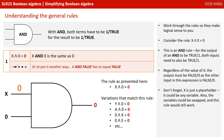So let's work through the rules so they make logical sense to you. Consider the rule X AND 0 equals 0. This is an AND rule, so for the output of an AND to be true or one, both inputs also need to be true or one. Regardless of the value held in X, the output must be false or 0, as the other input in this expression is 0. So X AND 0 must always be 0. X is just a placeholder — it could be any variable — and the variables could be swapped and this rule would still work. So although the rule may be presented as X AND 0 equals 0, you can use it to match many different expressions.